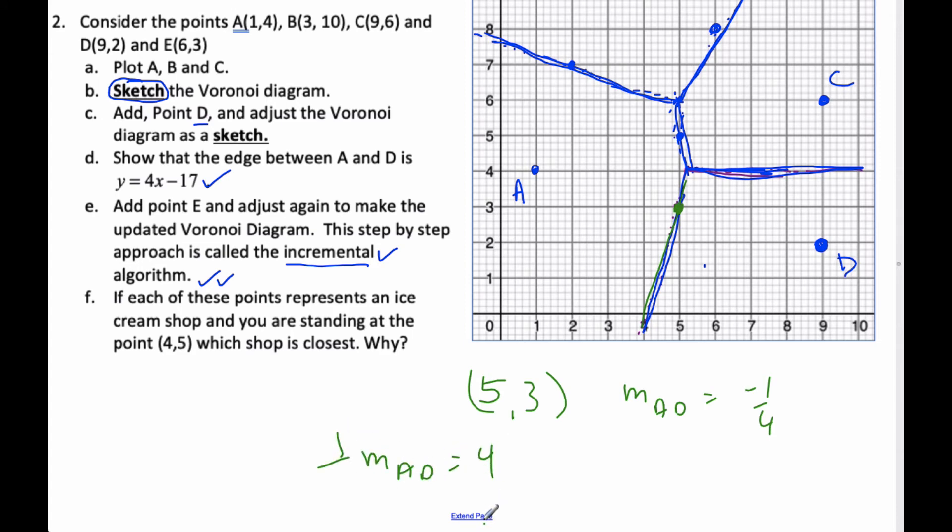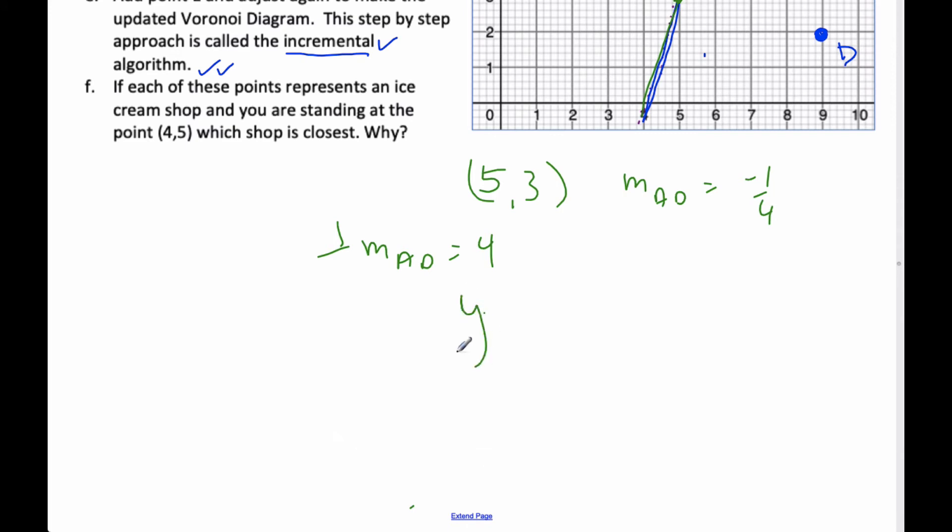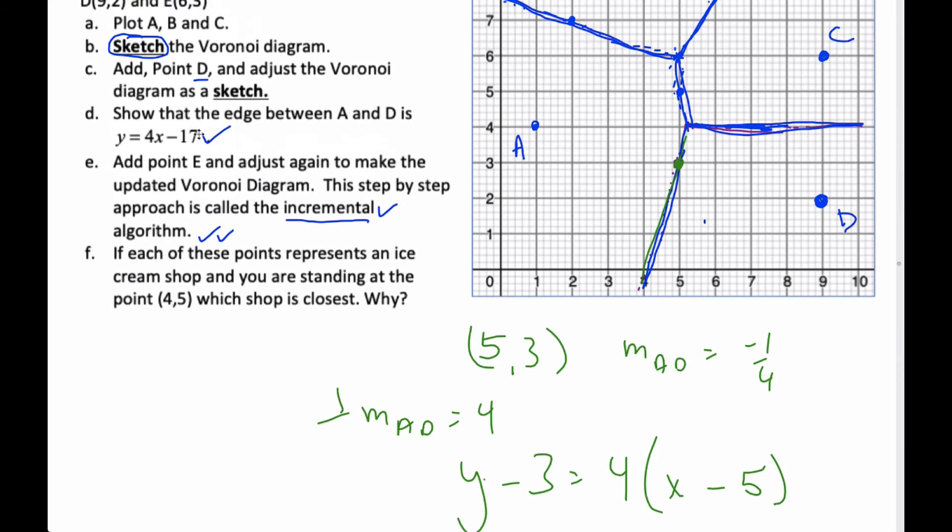And so if I go Y minus Y1 is equal to four X minus X1. So I get Y minus three is equal to four X minus 20. Y is equal to four X minus 17. So I've just shown you that the perpendicular bisector is indeed four X minus 17.